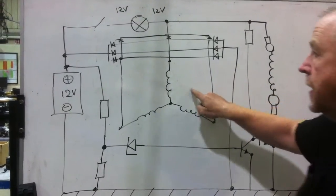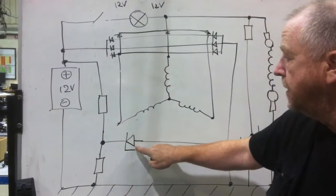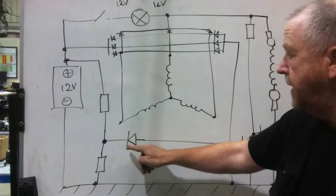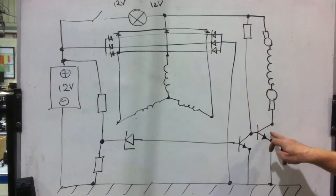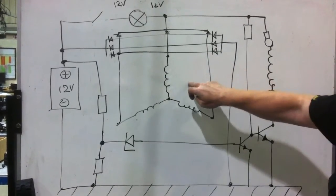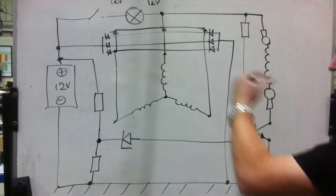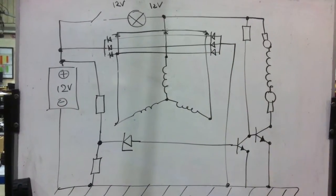Which means battery voltage drops. Which means that this diode here stands back up again and resumes blocking. Which switches this fellow off. Which allows this guy to be switched on. Which allows the rotor to be energized. Which allows this guy to make electricity. And that cycle just goes on and on and on. So that's your voltage regulator.